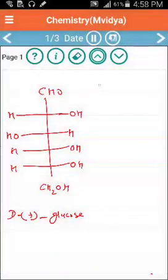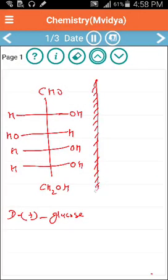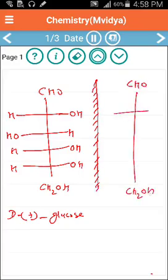Here we need to draw mirror images of glucose and fructose. This is the formula of D-plus glucose, and we need to draw a mirror image for this. CHO situated in same position, CH2OH also. Now this OH...